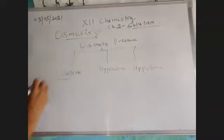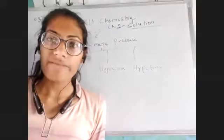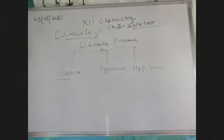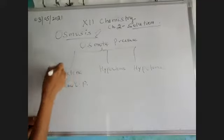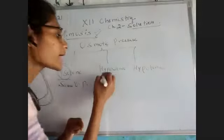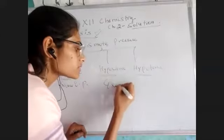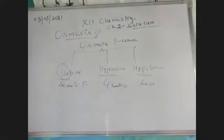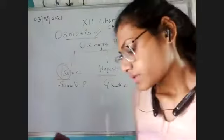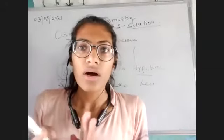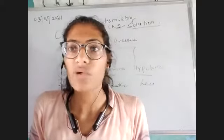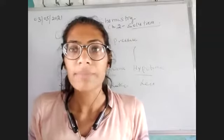Isotonic — as the name suggests, if we have two types of solutions having the same osmotic pressure, then these solutions are known to be isotonic solutions. If two solutions have the same osmotic pressure, they are said to be isotonic. Now, 'hyper' defines greater and 'hypo' defines lesser. Let's make it clear with an example. If we are putting a human body cell into a brine solution — brine solution is basically sodium chloride dissolved in water.